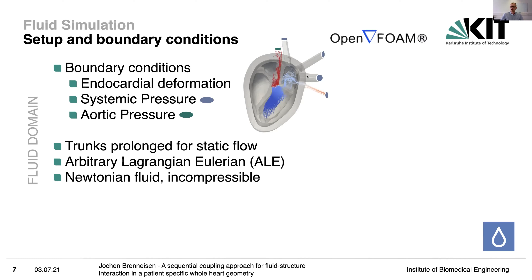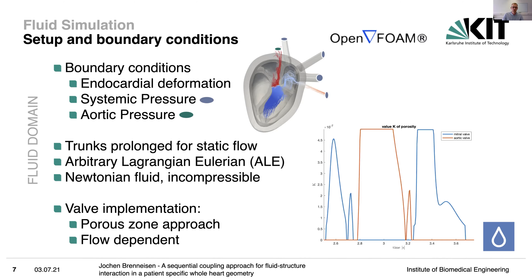Since we use the endocardial deformation over time, and the heart is deforming continuously, we have a moving boundary. That moving boundary is accounted for in the arbitrary Lagrangian-Eulerian (ALE) formulation. We model blood as an incompressible Newtonian fluid, solving the Navier-Stokes equations to account for pressure distribution and velocities. All simulations are done in the open-source software package OpenFOAM. Additionally, for the left heart, we need the mitral and aortic valves, and we implemented them as porous zones.